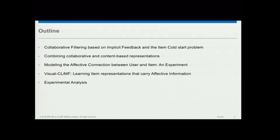The outline of the talk is that I'm going to talk about collaborative filtering based on implicit feedback and the item cold start problem. Then combining collaborative and content-based representations — what kind of content representations you would actually use to combine with collaborative to improve performance. I'll show an experiment on modeling the affective connection between users and items, and then present Visual CLIMF, which is a modification of the popular algorithm CLIMF — collaborative less is more filtering — and show how to add affective information there.